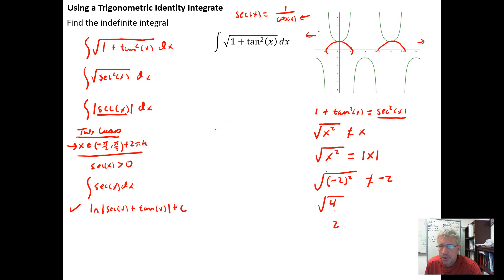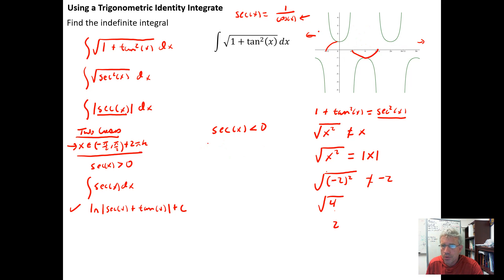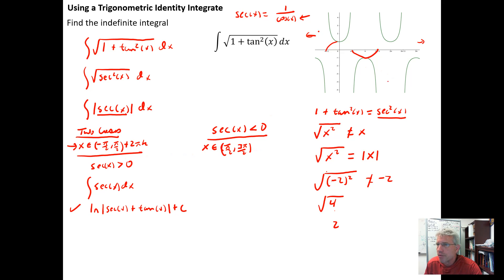Case 2 occurs when the secant of x is less than 0, which happens when the cosine function is negative — from π/2 to 3π/2. So the secant function is negative when x is in the open interval from π/2 to 3π/2 plus 2πk, accounting for infinitely many such intervals.